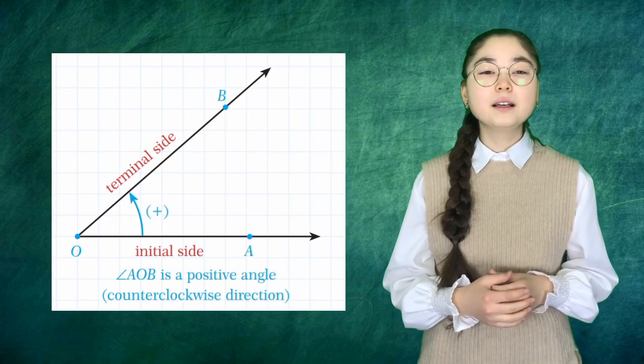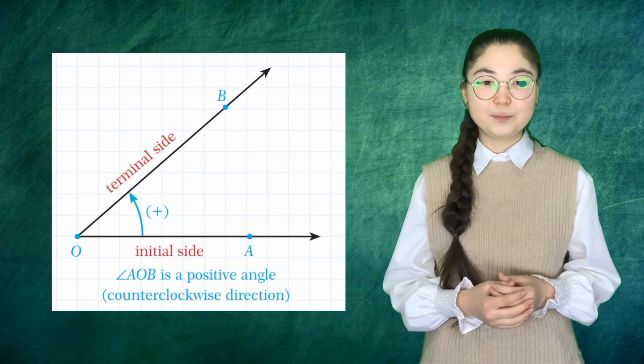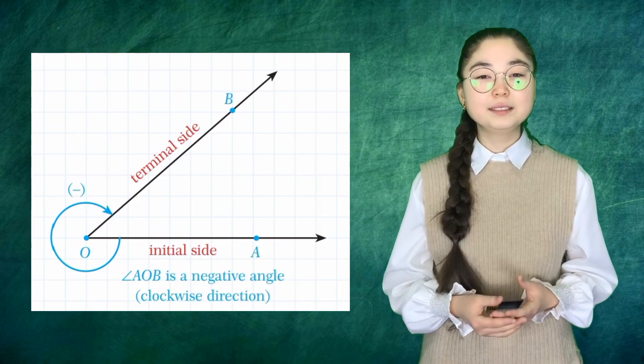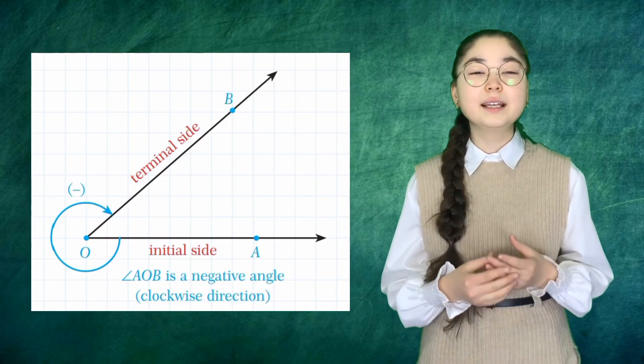If the angle is measured counterclockwise, then the angle is called a positive angle. If it is measured clockwise, then the angle is called a negative angle.